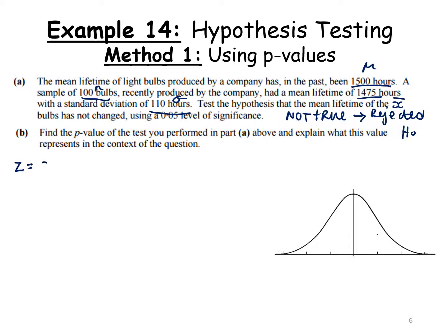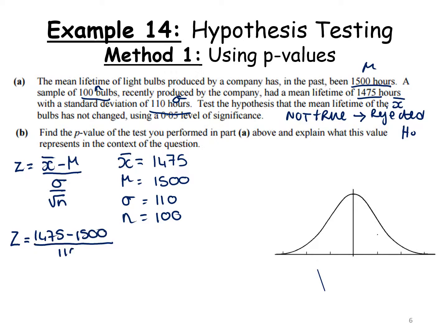Z equals x̄ minus μ all over σ over root n. So x̄ is 1475, μ is 1500, σ is 110, and n is 100. Working through: 1475 minus 1500 all over 110 divided by square root of 100. We get Z equals minus 2.27.